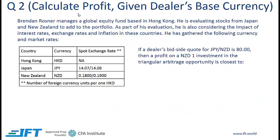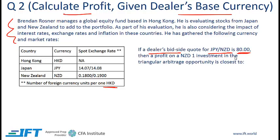Next question: here we need to calculate profit given a dealer's base currency. We have some context, then we are given the interbank rates where the base currency is the Hong Kong dollar, and then we have a dealer's bid-side quote for Japanese yen to New Zealand dollar. We need to calculate the profit on NZD 1. Notice we are being asked to calculate profit using the base currency from the dealer quote.